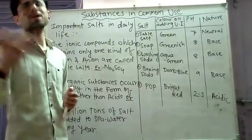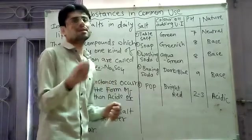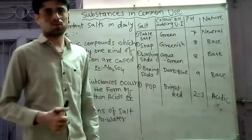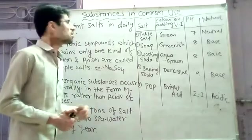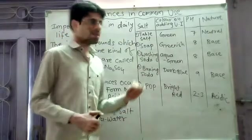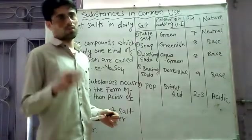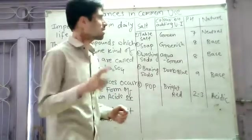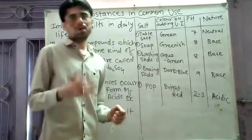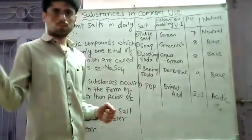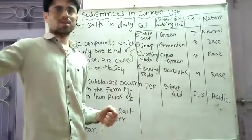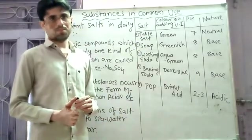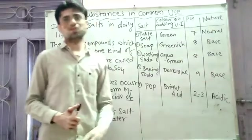Now we are going to see some salts and some indicators — for example, litmus paper and phenolphthalein. We are doing one activity in which we are using a universal indicator. With the help of this universal indicator and pH, we are going to determine the pH of a substance along with its nature. pH varies from 0 onwards.